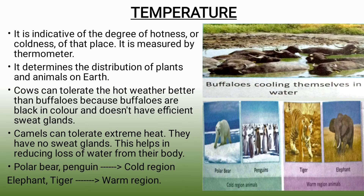Camels can tolerate extreme heat because they live in the desert. Importantly, camels don't have any sweat glands at all, while buffaloes just lack efficient sweat glands. Because camels have no sweat glands, waste water from their body is not lost through sweating, so the loss of water is reduced and water is retained in their body. That is why camels can survive easily in the hotter desert regions.